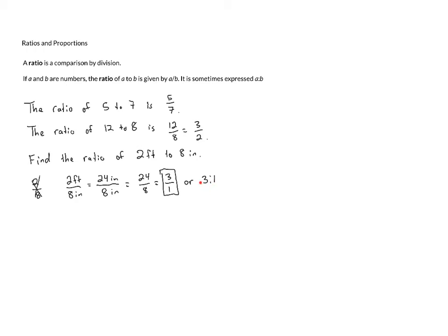Because this ratio is 3 to 1, that's how we read this, 3 to 1, this means that the original length, 2 feet, is 3 times as large as the other length, which is 8 inches. Now usually I actually draw this on a whiteboard or a chalkboard.